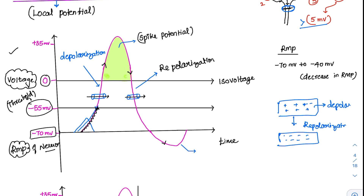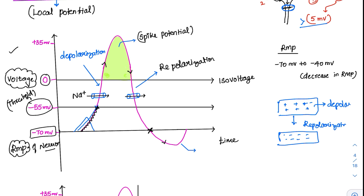During repolarization, the potential should ideally return and stop at RMP. What is the ion channel involved in depolarization? It is sodium — sodium ions flow in and cause depolarization. Repolarization can be due to entry of negative ions or exit of positive ions. Here, potassium ions leave from inside the cell, causing loss of positivity, which drives repolarization.